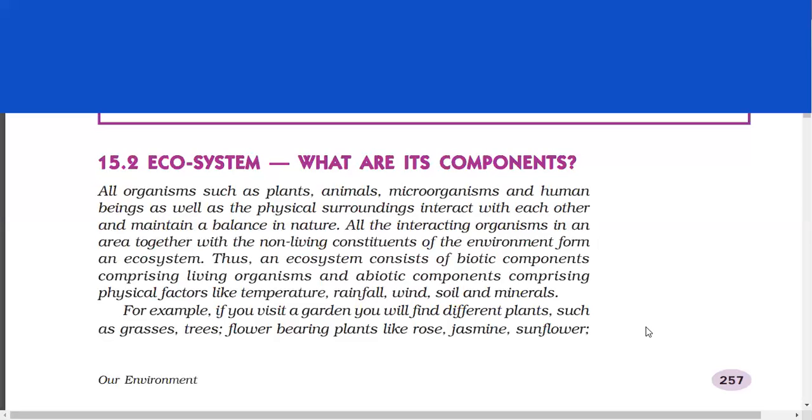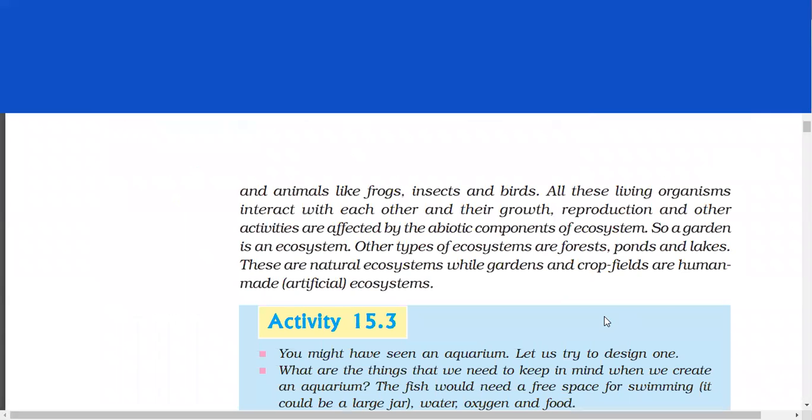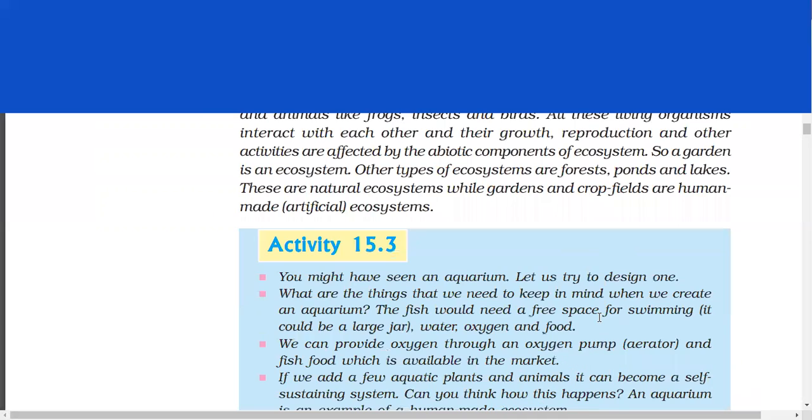For example, if you visit a garden, you will find different plants such as grasses, trees, flower bearing plants like rose, jasmine, sunflower and animals like frogs, insects and birds. All these living organisms interact with each other and their growth, reproduction and other activities are affected by the abiotic components of ecosystem. So, a garden is an ecosystem.